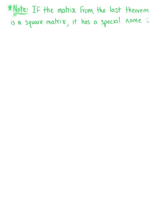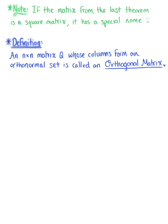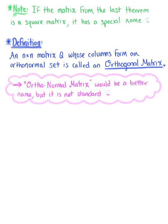If that same matrix Q from the last theorem is a square matrix, then we give that matrix a special name. An n by n matrix Q whose columns form an orthonormal set is called an orthogonal matrix. Keeping the definition of an orthonormal set in mind, the column vectors of Q are all orthogonal to each other and are also all unit vectors. So it might be better to name this the orthonormal matrix — however, orthogonal matrix is what we're working with.